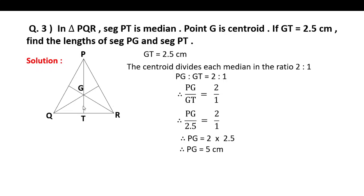PT is equal to PG plus GT. PG value 5 and GT value 2.5. Therefore, PT is equal to 7.5 cm. Therefore, length of PG equal to 5 cm and PT is equal to 7.5 cm.